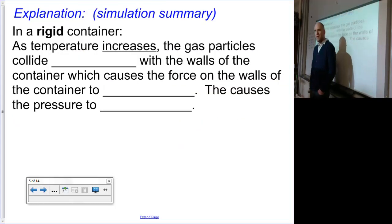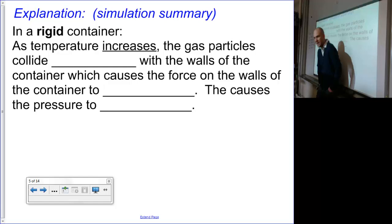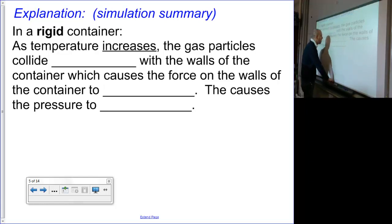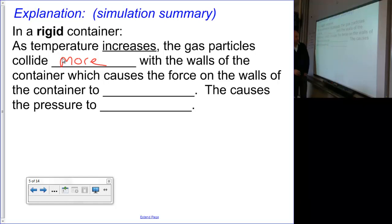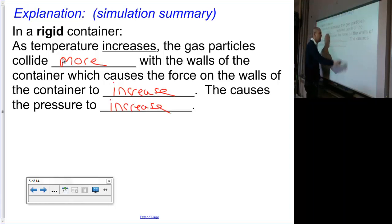Let's summarize what we did in the PhET simulation earlier today. For a rigid container — a rigid container is any container that cannot change its volume, like a metallic or aerosol can — our volume is constant. So, as temperature increases, the gas particles collide more with the walls of the container, which causes the force on the walls to increase. More collisions means more force, and more force means the pressure is going to increase.